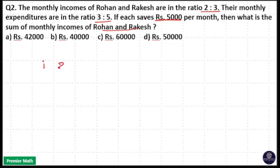Income is in the ratio 2:3. Expenditure is in the ratio 3:5. That means income minus expenditure equals their savings. The difference between income and expenditure is Rs. 5000.